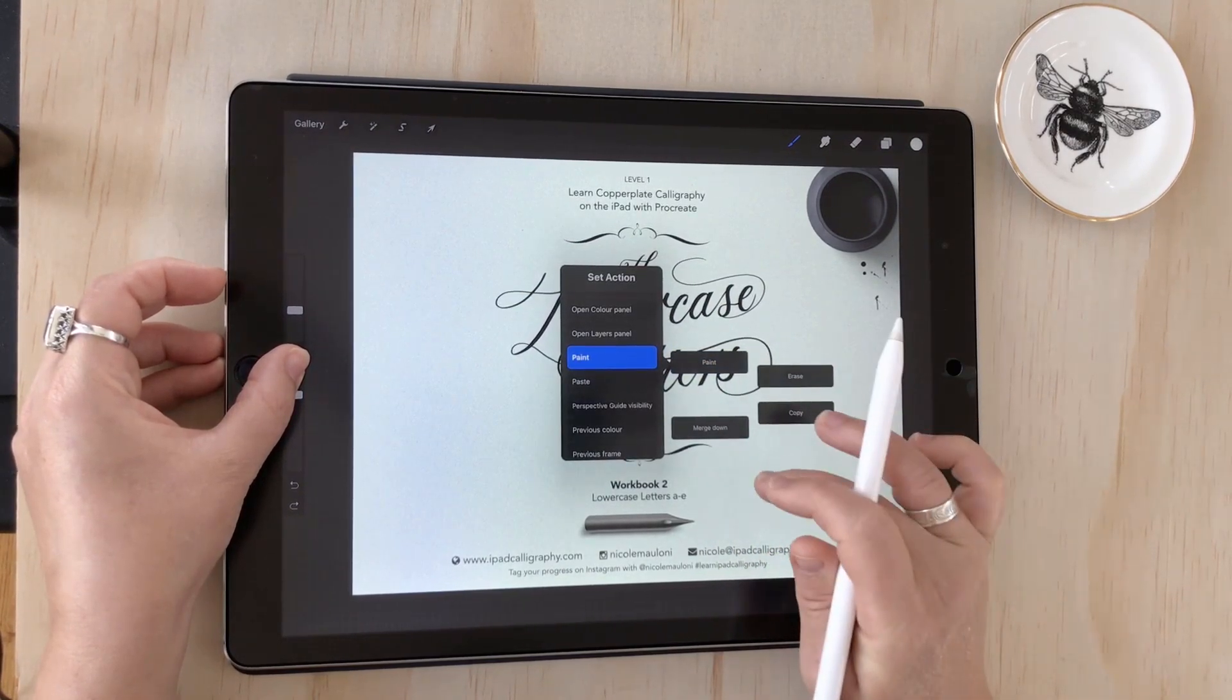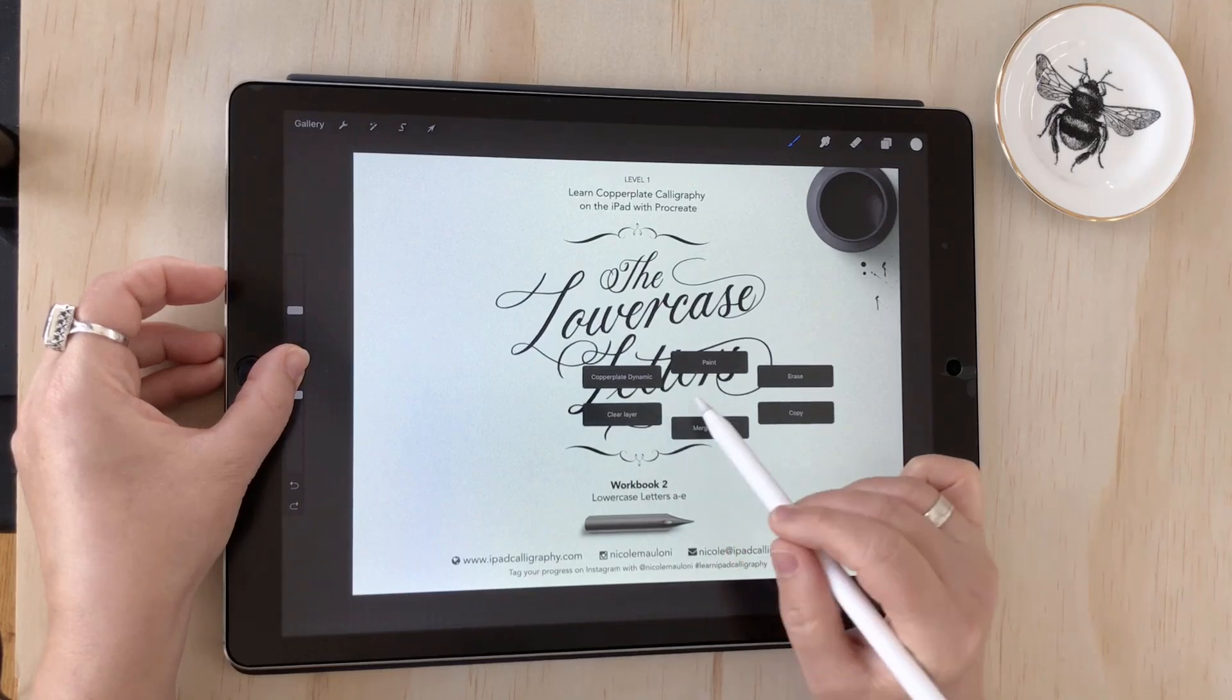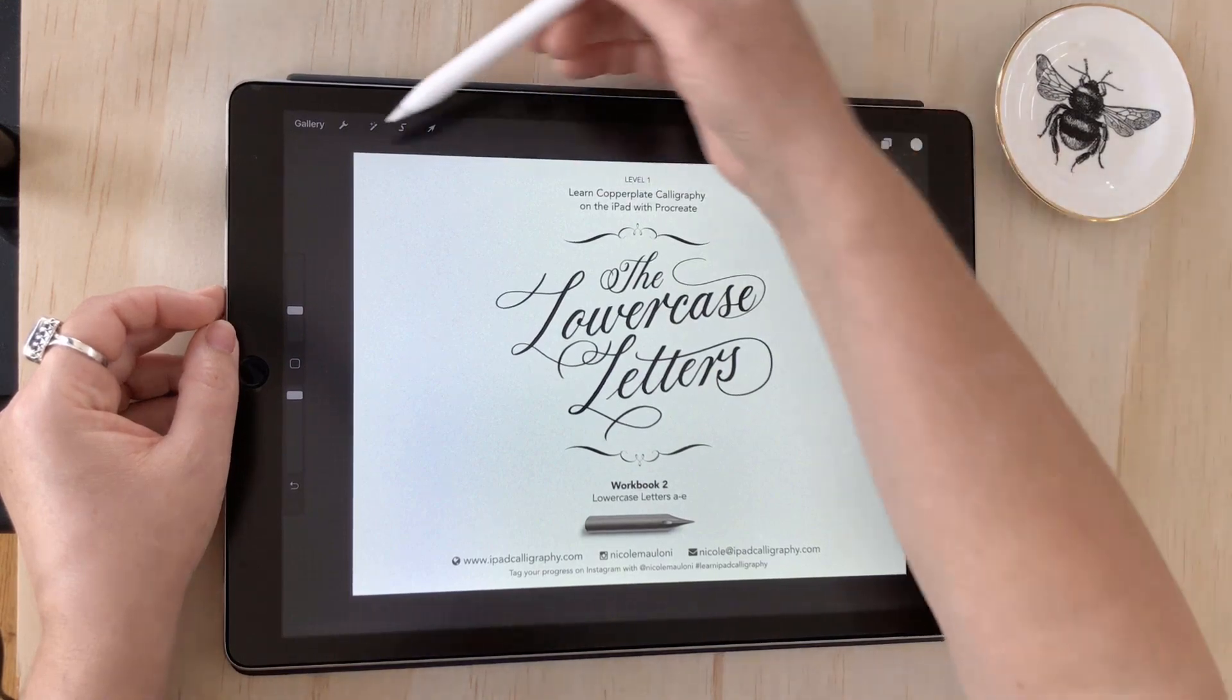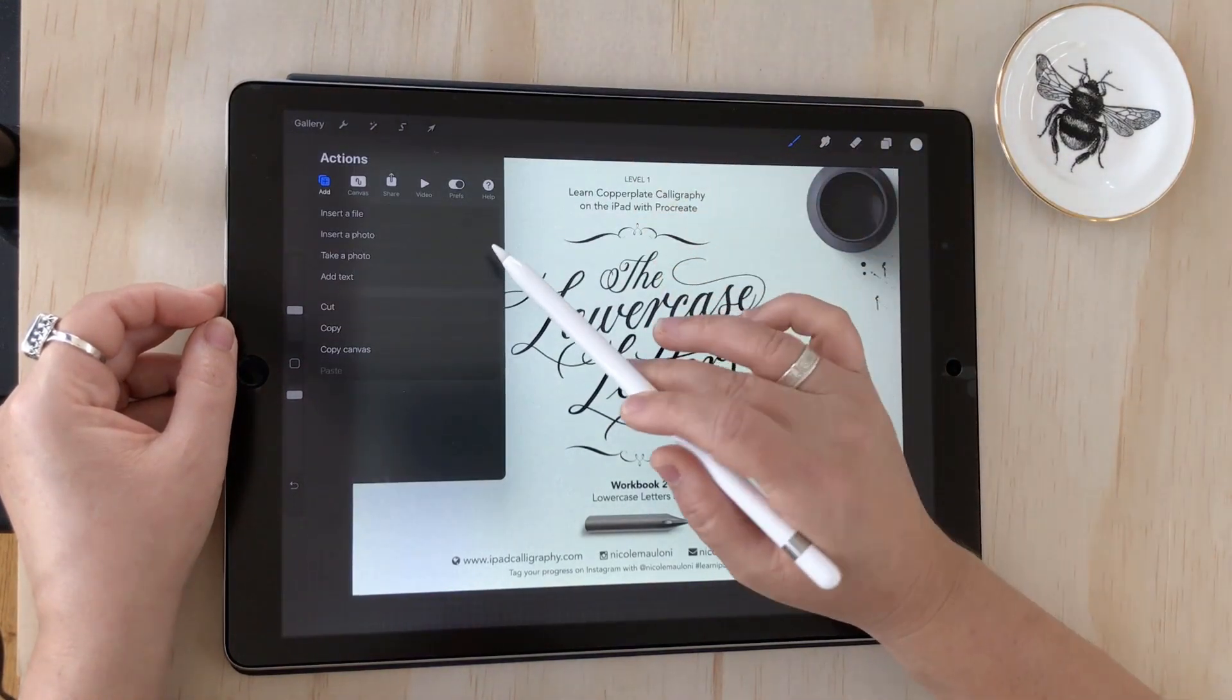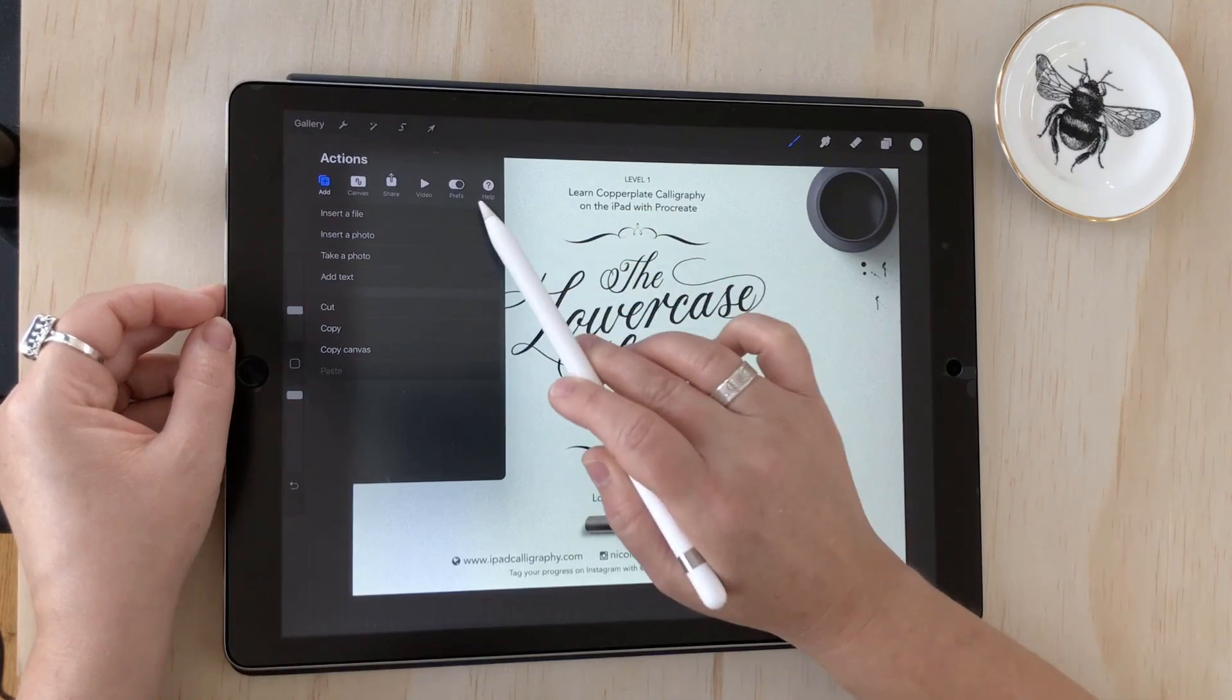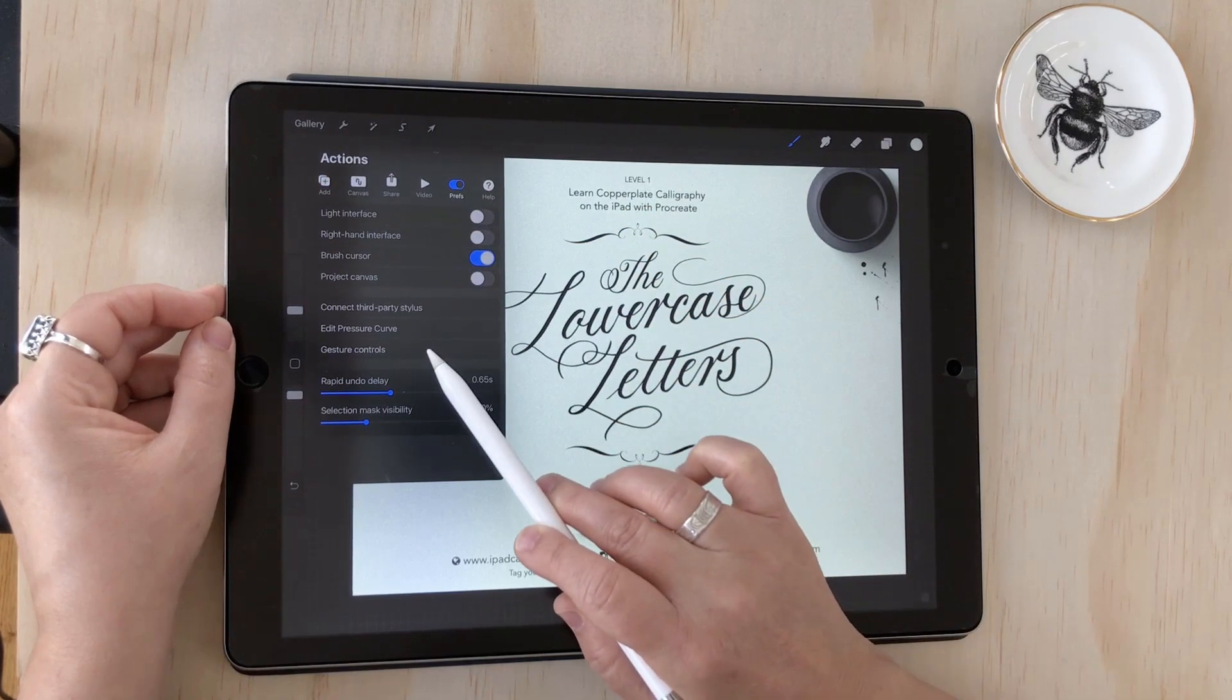I'm going to show you how I use mine in a minute, but just so you know where to find it, if your menu doesn't appear in the same way that mine did, you can set what your gesture shortcut is just by coming into the actions panel. So you tap the little spanner icon and then preferences, there's this gesture controls, just tap on that.